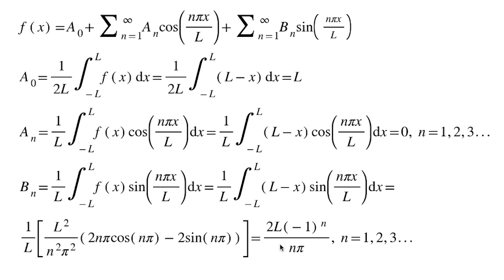So, you get 2L times negative 1 to the nth power, divided by n times pi, where n is 1, 2, 3, etc, etc, to infinity.